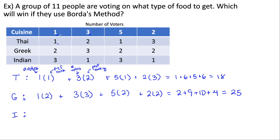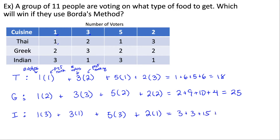For our last candidate, we have one voter that ranked them third, plus three voters that rank them first, plus five voters that rank them third — five times three — plus two voters that rank them first. Multiplying all this out, we get three plus three plus fifteen plus two, which equals 23. So the lowest score we have is 18, and that is the choice that would win using Borda's method.